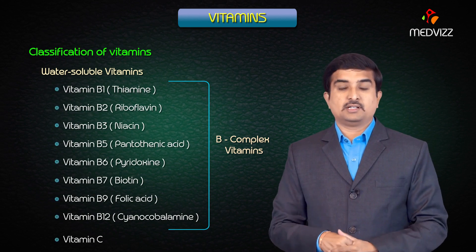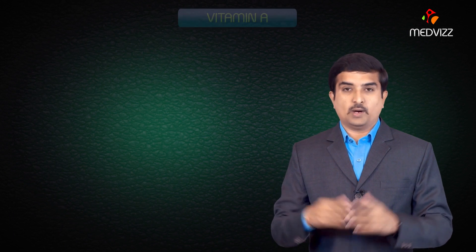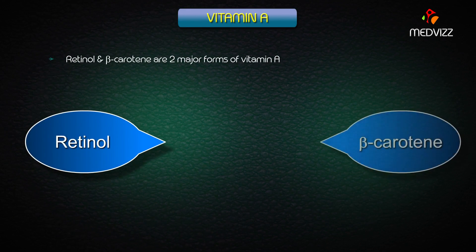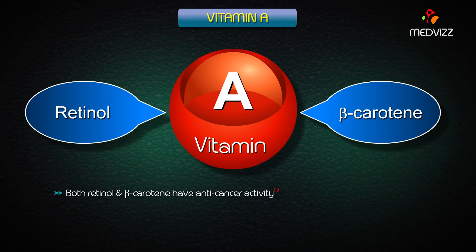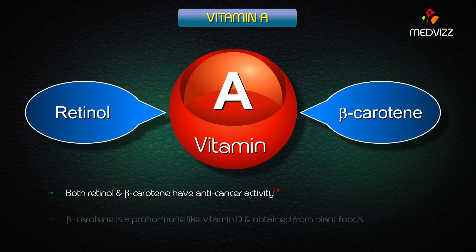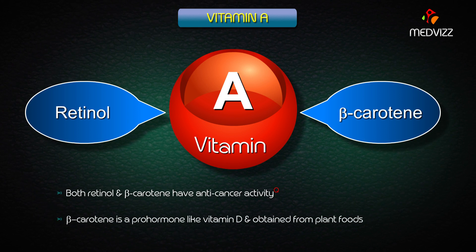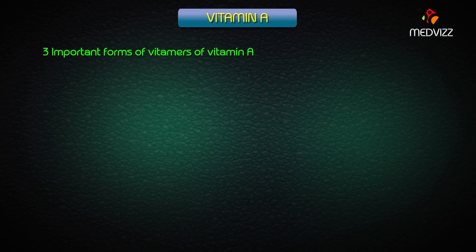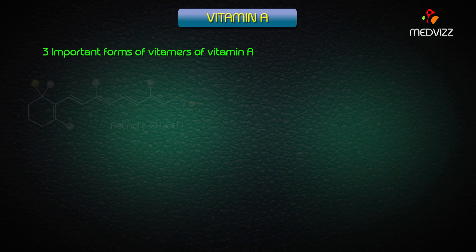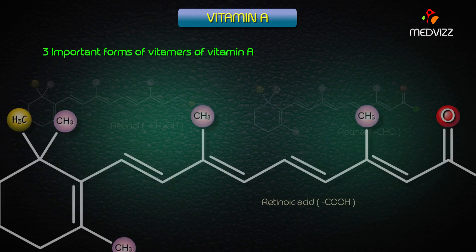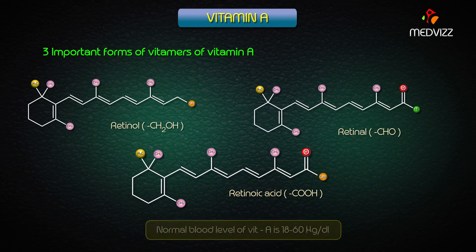Let us begin with the first one: vitamin A. Retinol and beta-carotene are the two major forms of vitamin A, and both of them have anti-cancer activity. Beta-carotene is a pro-hormone like vitamin D and is mainly obtained from plant foods. There are three important forms of vitamin A: retinol, the alcoholic form; retinal, the aldehyde form; and retinoic acid, the carboxylic form.